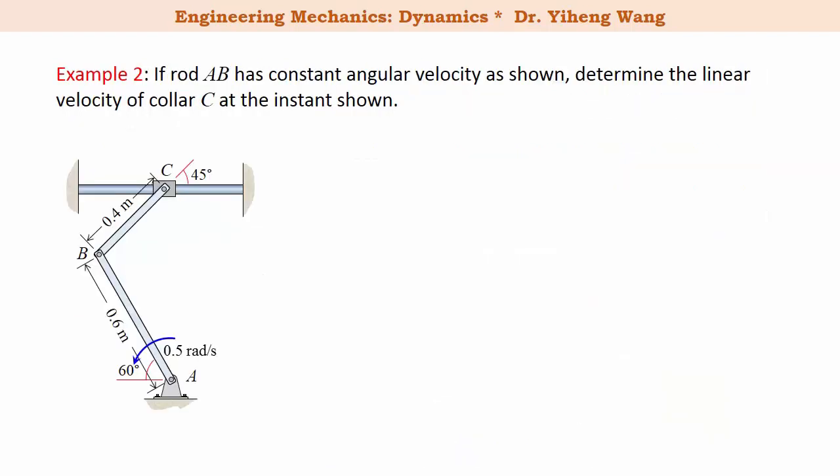Let's look at this example. If rod AB has a constant angular velocity of 0.5 radian per second counterclockwise, we need to determine the linear velocity of collar C at this instant.